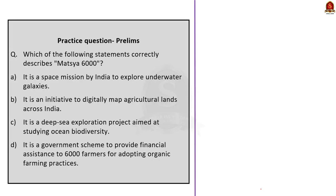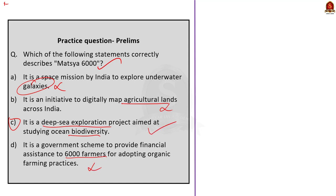Which of the following statements correctly describes Matsya 6000? Option A — it is a space mission to explore underwater galaxies — is wrong. Option B — an initiative to digitally map agricultural lines — is not correct. Option C — it is a deep sea exploration project aimed at studying ocean biodiversity — yes, this is correct. Option D — a government scheme to provide financial assistance to 6000 farmers — is also incorrect. So the answer is option C, deep sea exploration project.